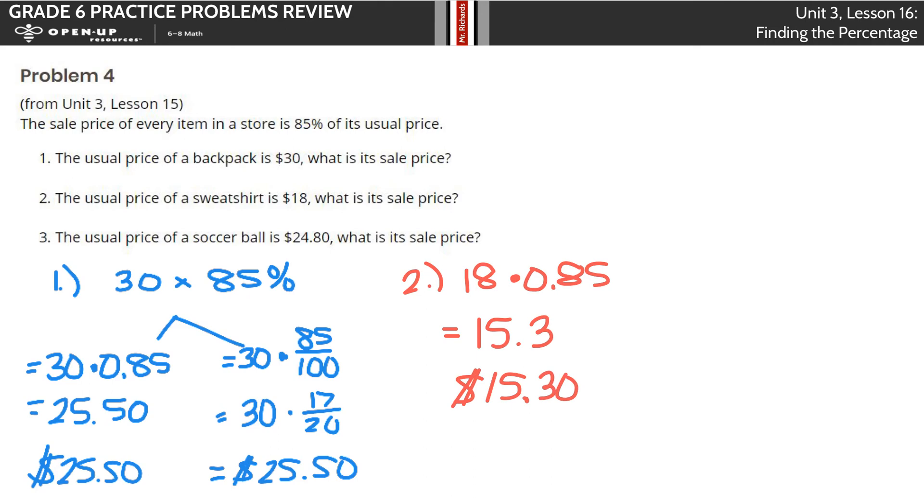Number three, the usual price of a soccer ball is $24.80. What's its sale price? $24.80 times the 85% here gets us kind of a crazy number, but $21.08.